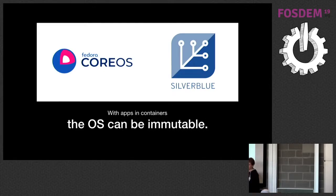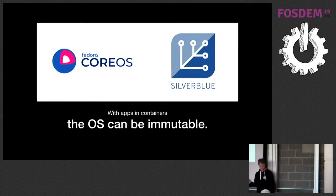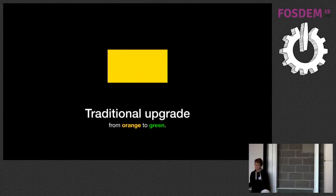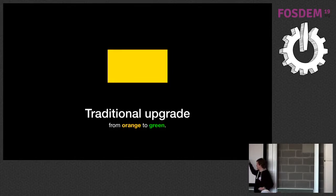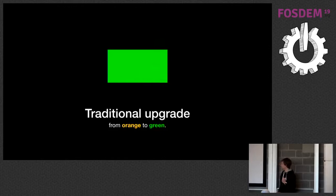The OS can be immutable. We have two projects in Fedora: Fedora CoreOS and Silverblue — immutable operating systems for containers. CoreOS is for servers and Silverblue is for workstations. What's interesting is how they handle upgrades and system management.